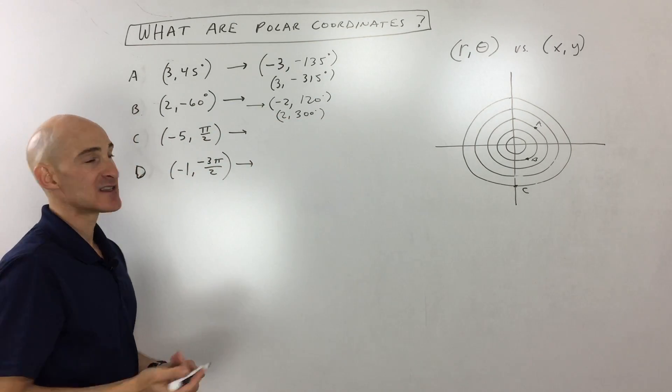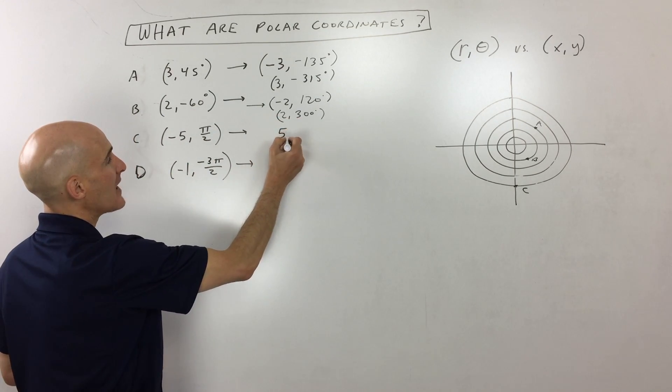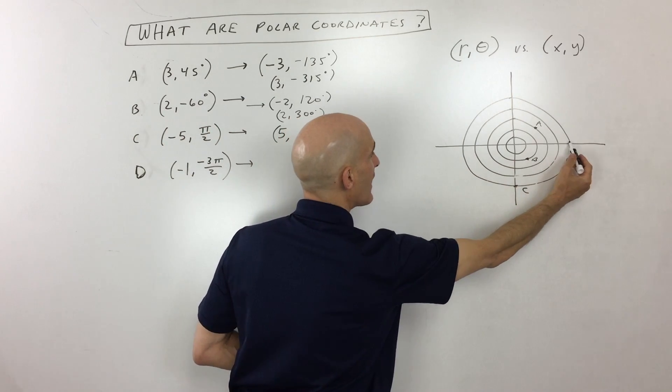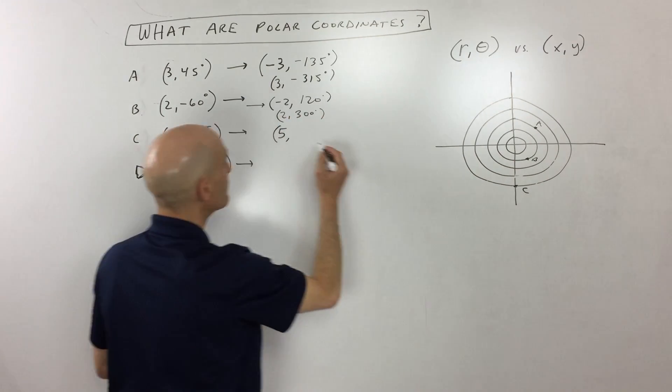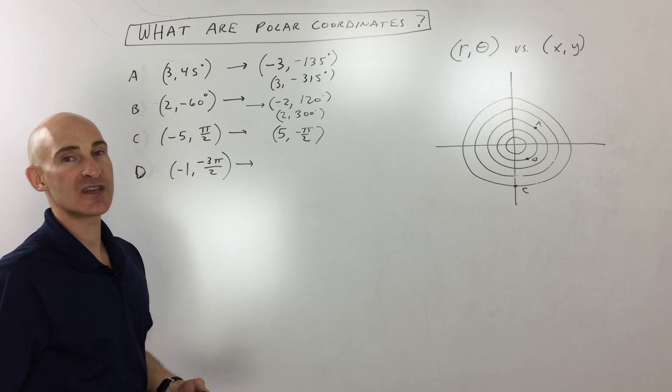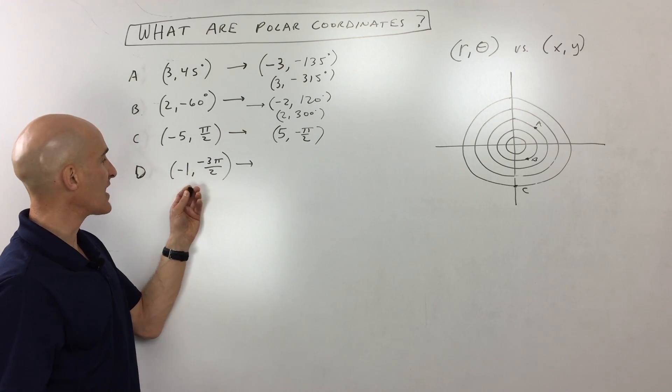What's another way to locate that same point? Well, we could go positive 5. So that's going to the right 5. And then we could go negative π/2. That's another way to locate that same point. And there's an infinite number of ways.